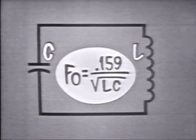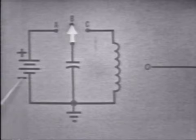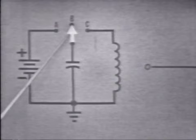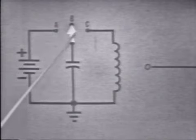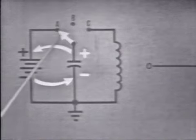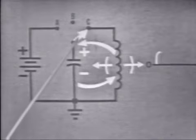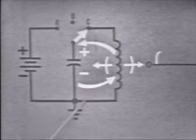To be sure you understand how this circuit will oscillate, let's follow the action step by step. We'll need a power supply to provide the initial energy — in this case, a battery. This switch will allow the capacitor to be connected to the battery or to the coil. If we flip the switch to A, the capacitor charges to the battery voltage. Move the switch to B, and the capacitor is disconnected from the power supply, though it is still fully charged. When the switch is moved to C, the capacitor will start to discharge through the coil, causing current to flow in this direction.